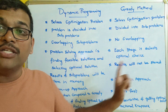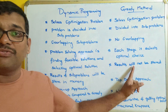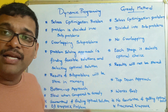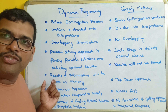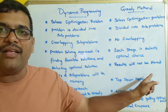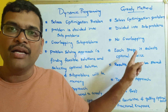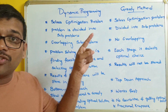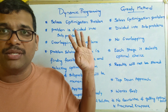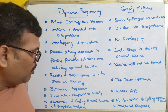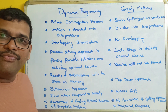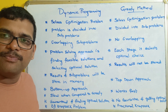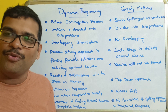To summarize: dynamic programming uses memoization while greedy does not, making greedy faster. Dynamic programming follows a bottom-up approach and greedy follows a top-down approach. Most importantly, dynamic programming guarantees an optimal solution while greedy does not. Both approaches are used for solving optimization problems. Hope you understood — like, share, and subscribe to our channel. Thanks for watching!